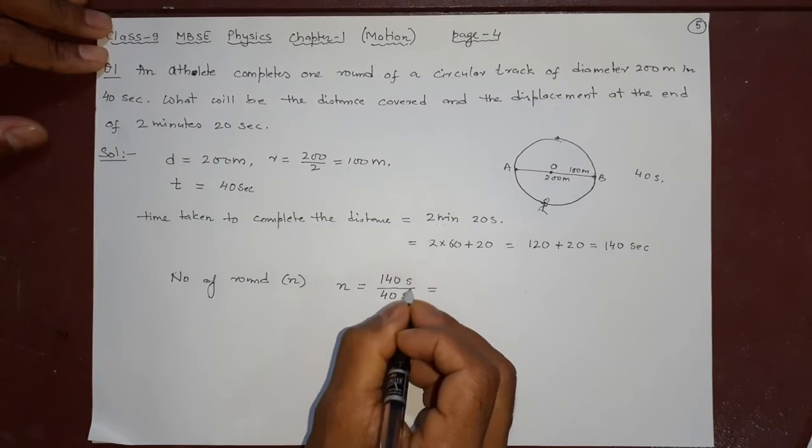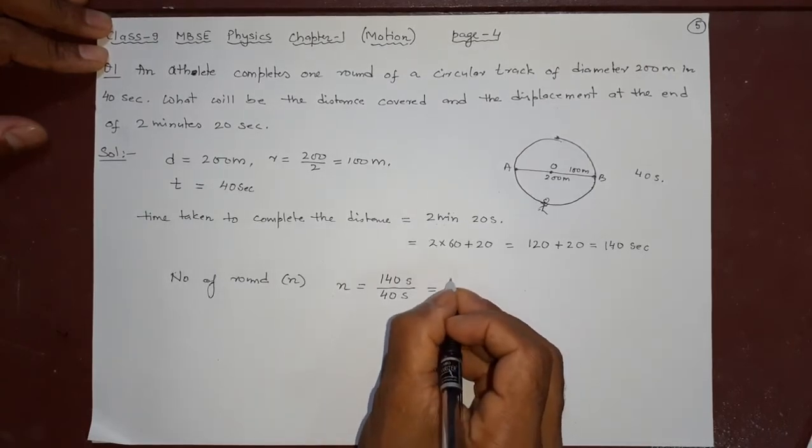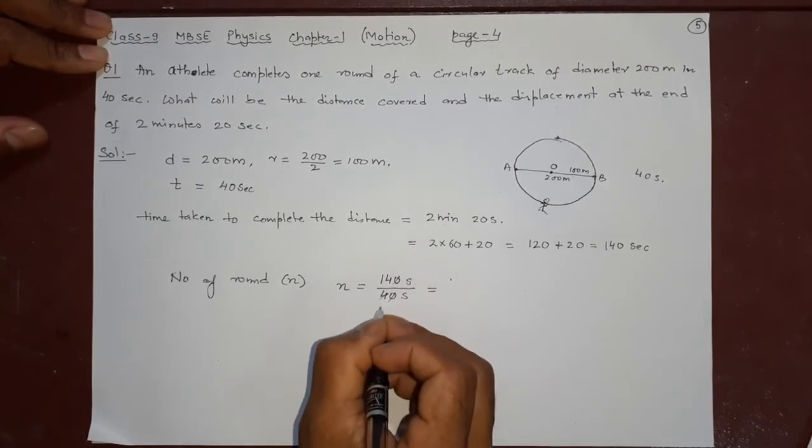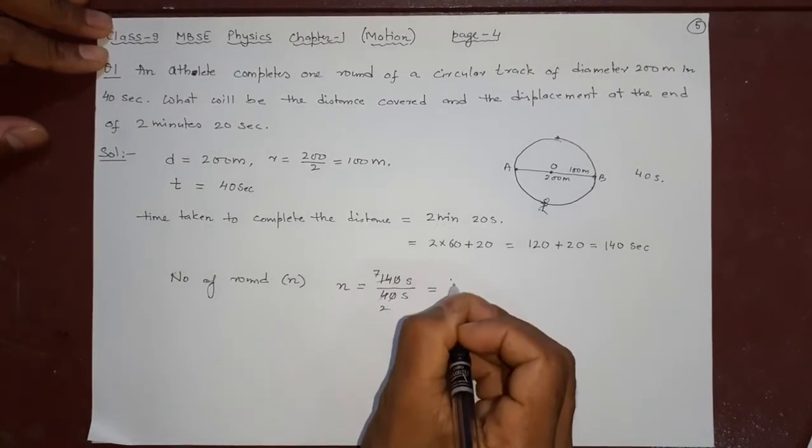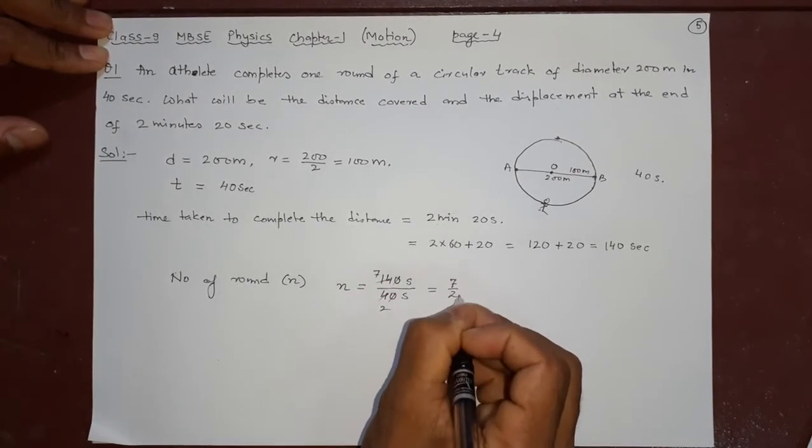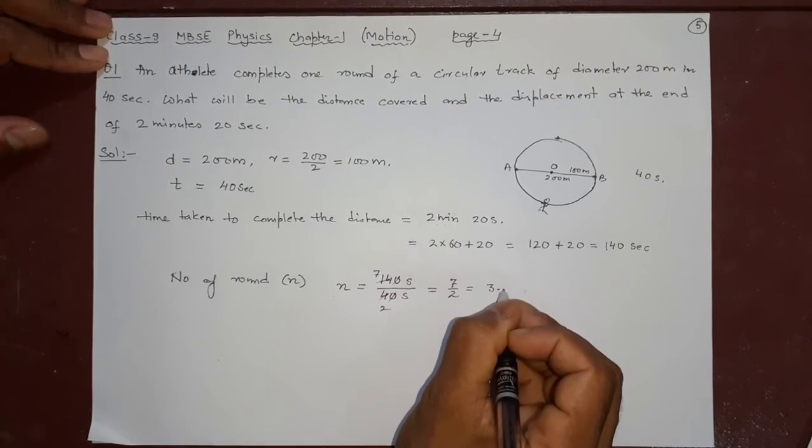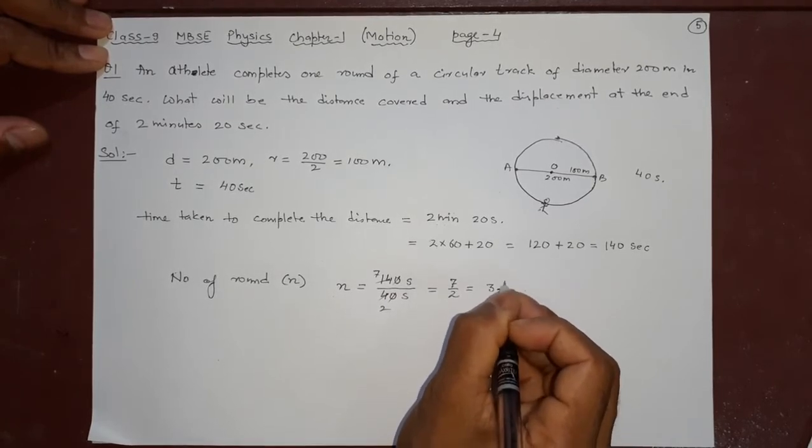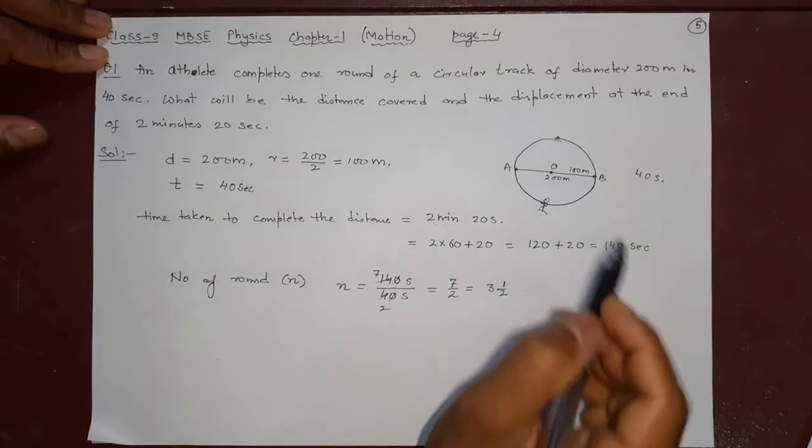0 and 0 cancel, seconds cancel. Cancel it. 2 times 2 is 4, 2 times 7. So you will get 7 by 2. What is the meaning? 3 and half, 3.5. 3 and half rounds it will make.